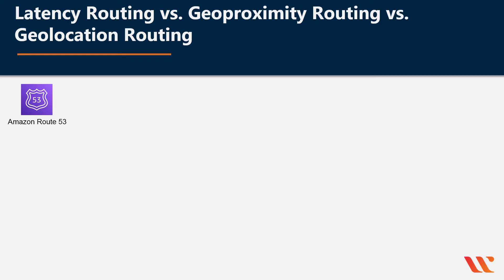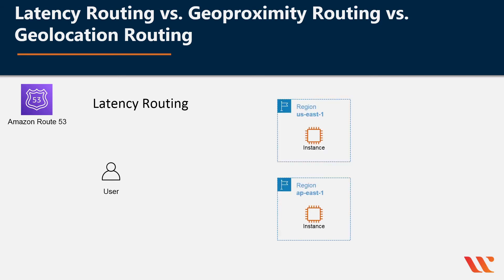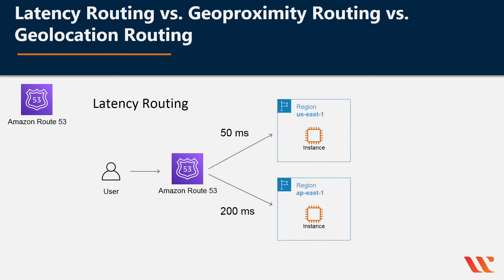First off, let's talk about latency routing. Latency is just a fancy way of saying the time delay before something happens — online gamers might call it lag. The way latency routing works is: imagine you had a user trying to get to a web server. The Route 53 DNS server would decide, based on network conditions of the past couple of weeks, which instances in which regions should serve that user. In this case, it would go to us-east-1, which has the lowest latency of 50 milliseconds.